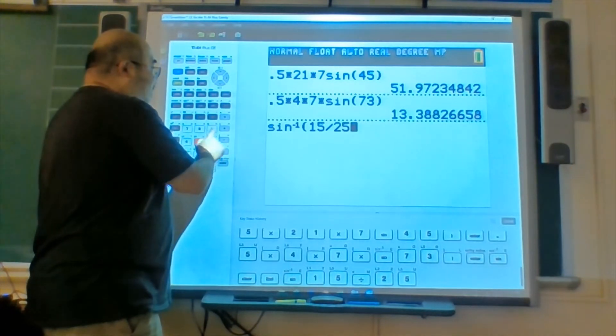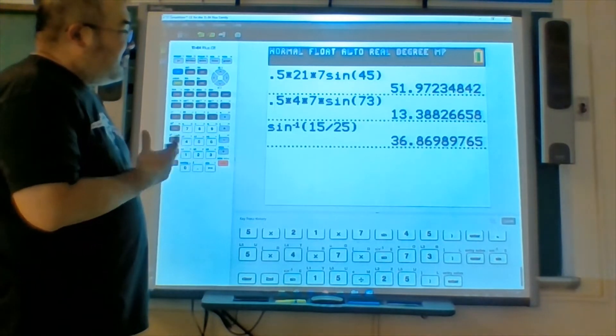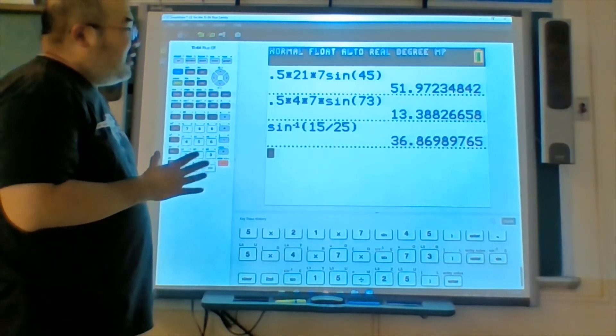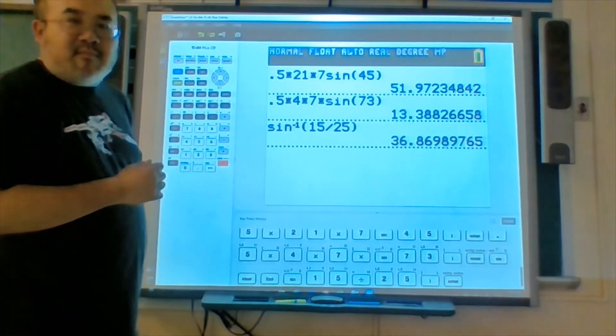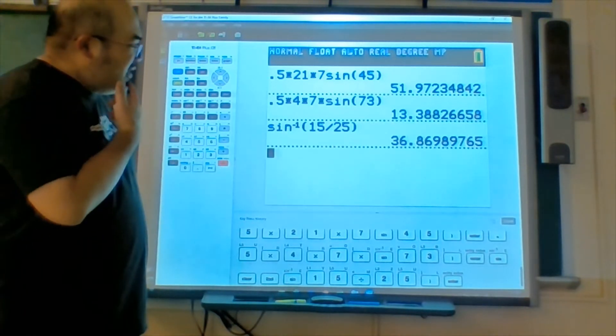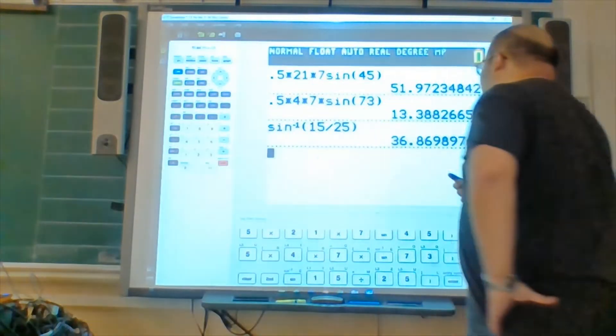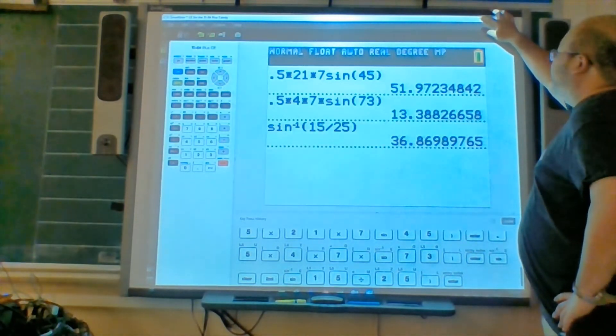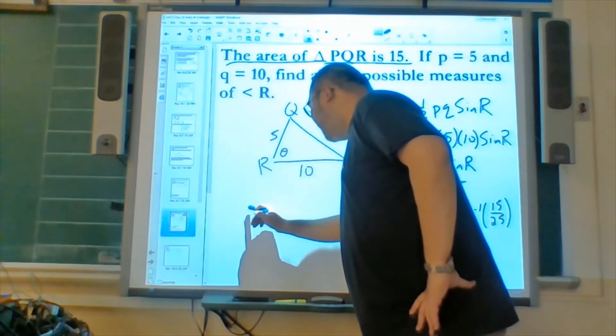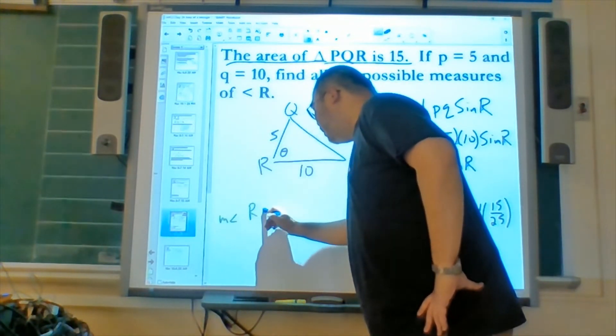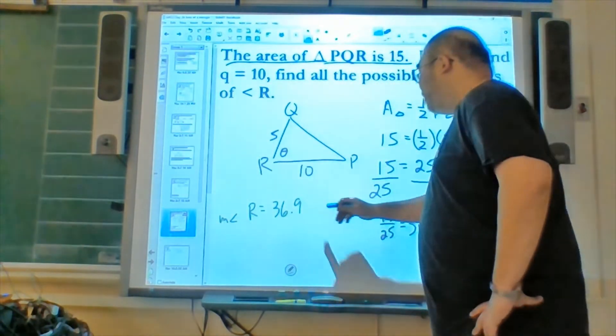And we get, in this case, 36.8698765, so it's about 36.87, or 36.9, okay? Now, 36.9. Let's see if it makes sense. We know the sine of, so in this case, the measure of angle R is equal to 36.9 degrees approximately.